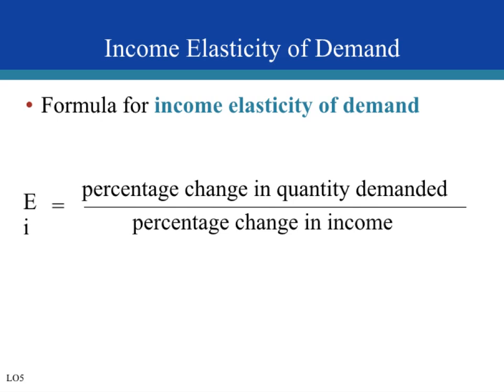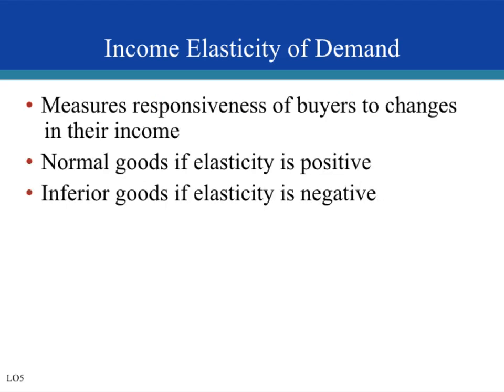Income elasticity of demand measures how quantity demanded of a good changes in response to a change in consumer income. The formula is percentage change in quantity demanded divided by percentage change in income. If my income goes up and I buy more sushi, that leads to a positive income elasticity of demand — sushi is a normal good. Normal goods: if your income goes up, you buy more; if your income goes down, you buy less.